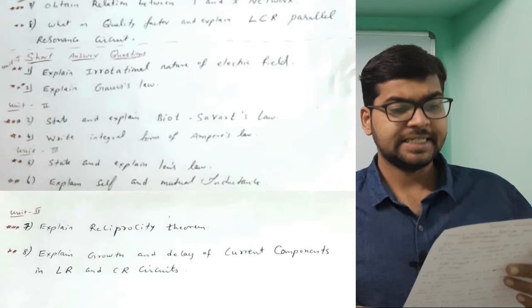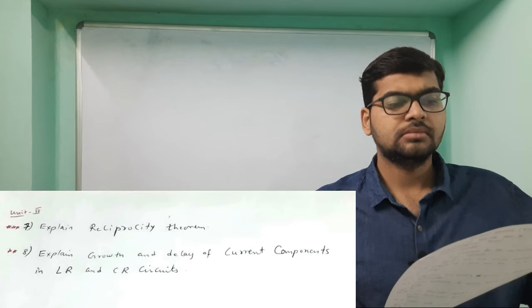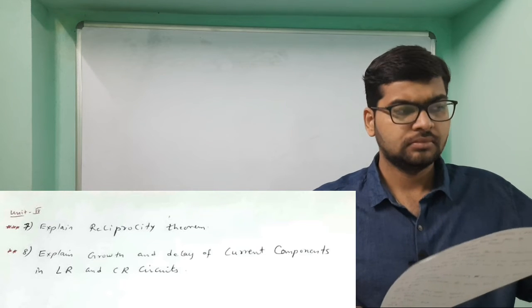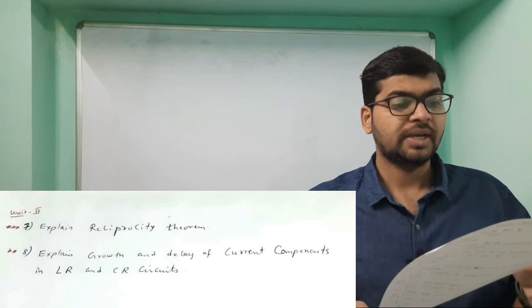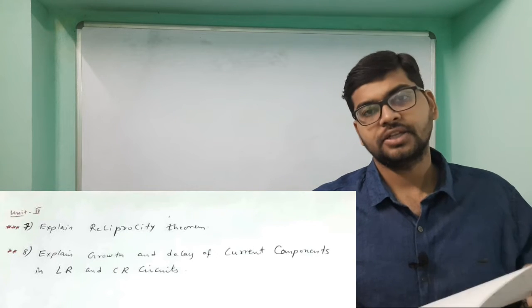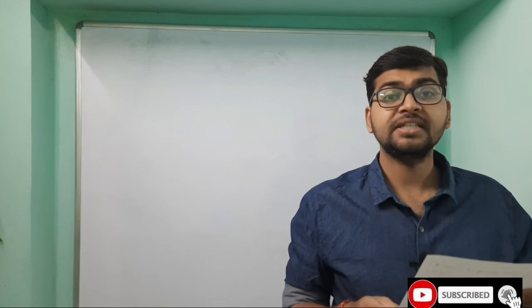This theorem is important, about 80 percent it will come. Explain the growth and decay of current components in LR and CR circuits. These are the important questions for BSC Physics second year electromagnetic theory.